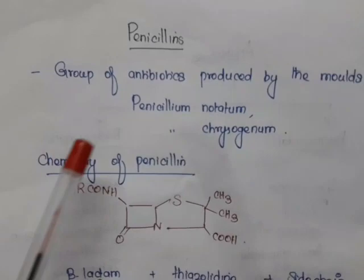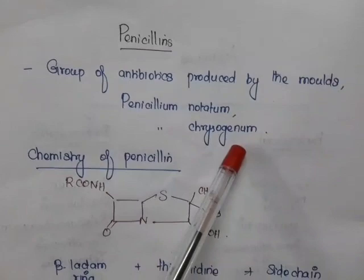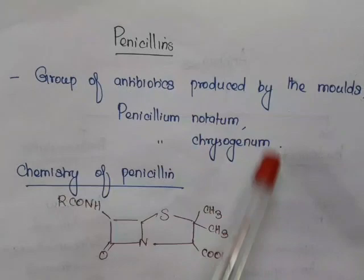Today we'll start with penicillin. Penicillin refers to a group of antibiotics produced by the mold Penicillium notatum, otherwise known as Penicillium chrysogenum. So the source is Penicillium notatum or Penicillium chrysogenum.